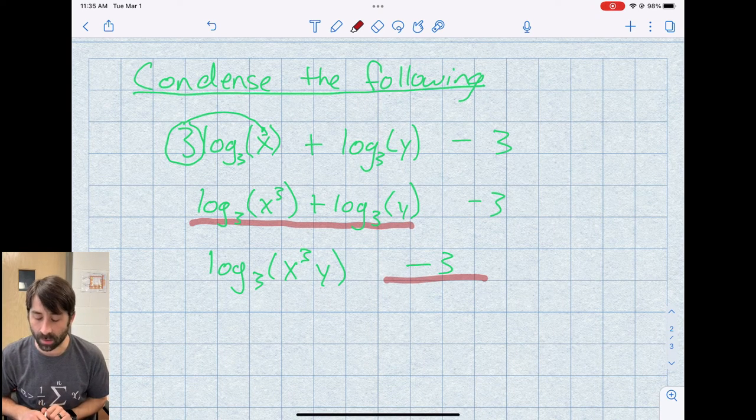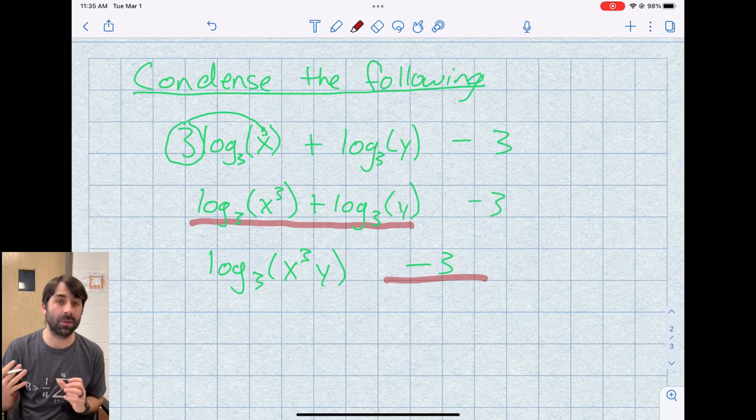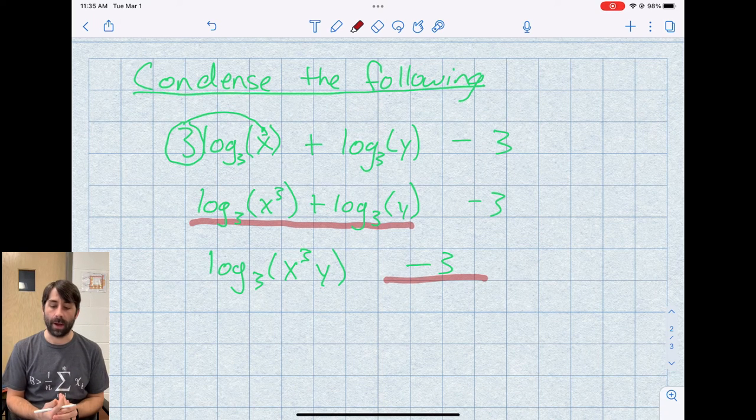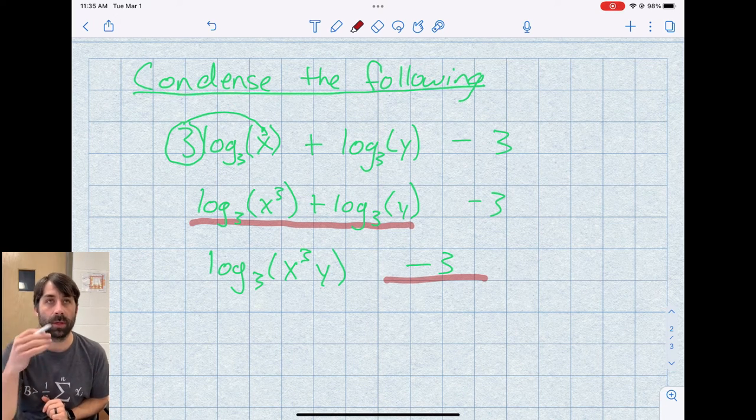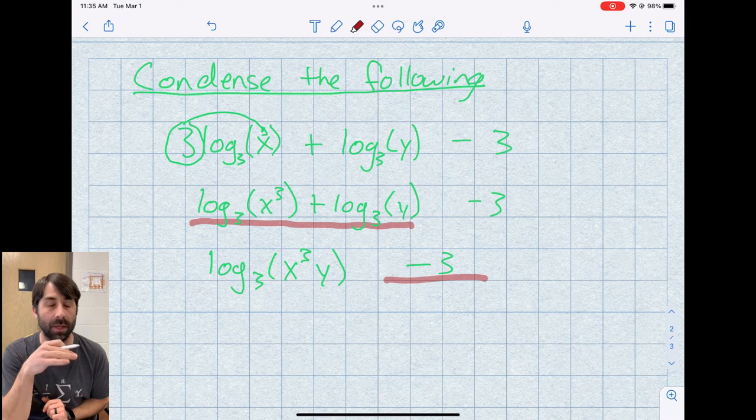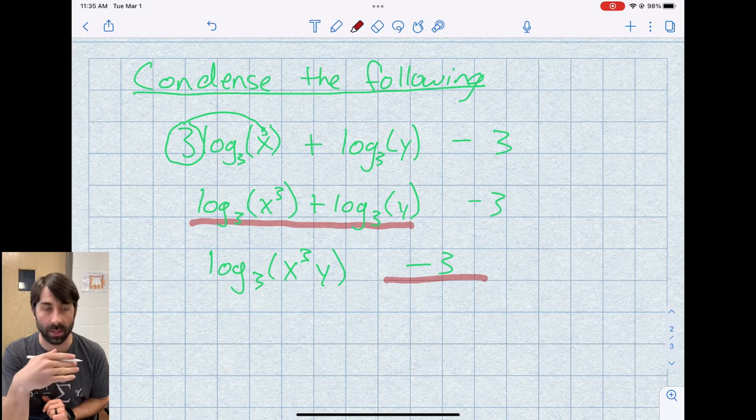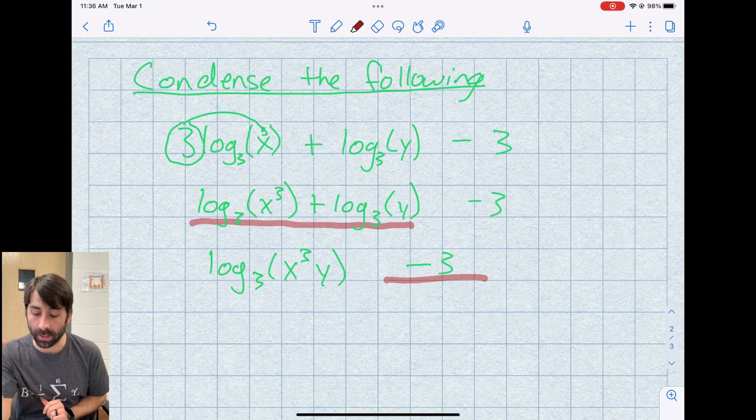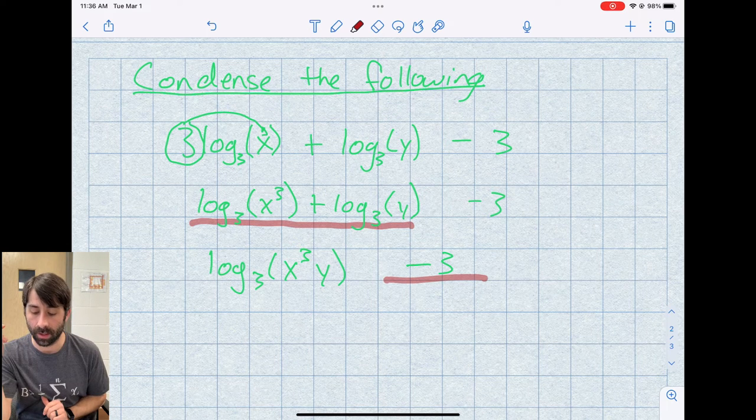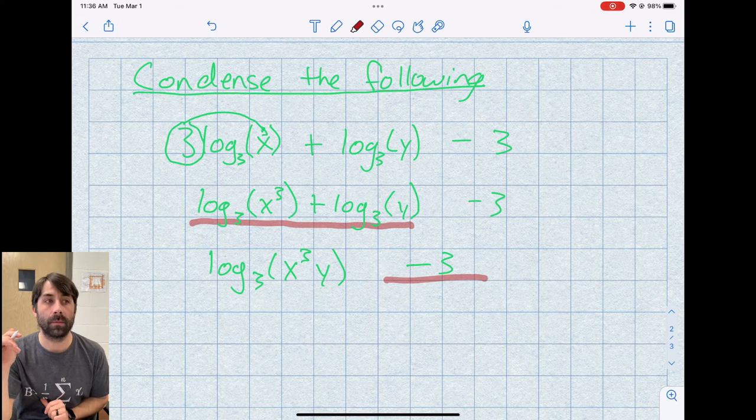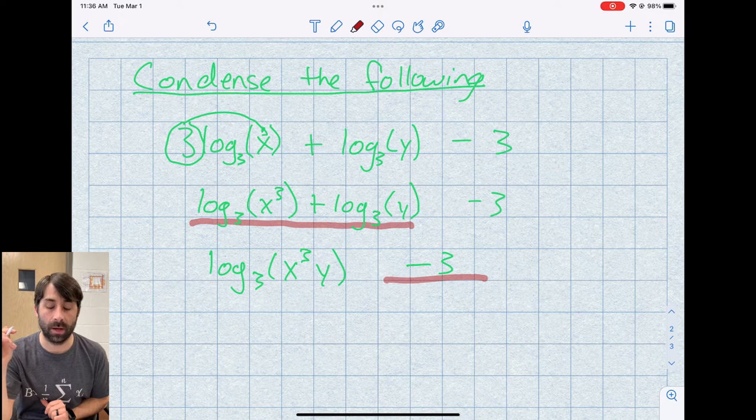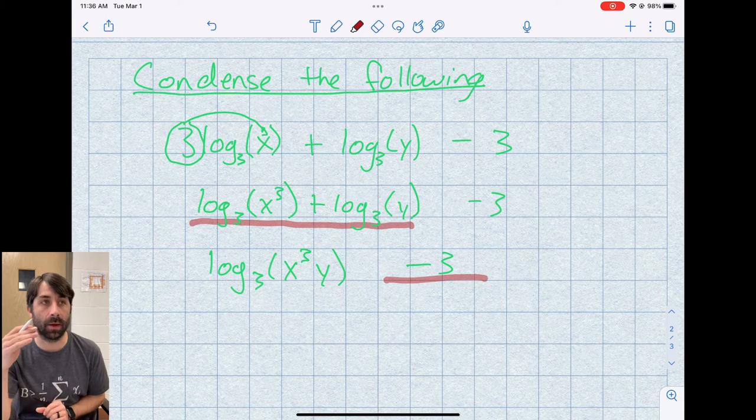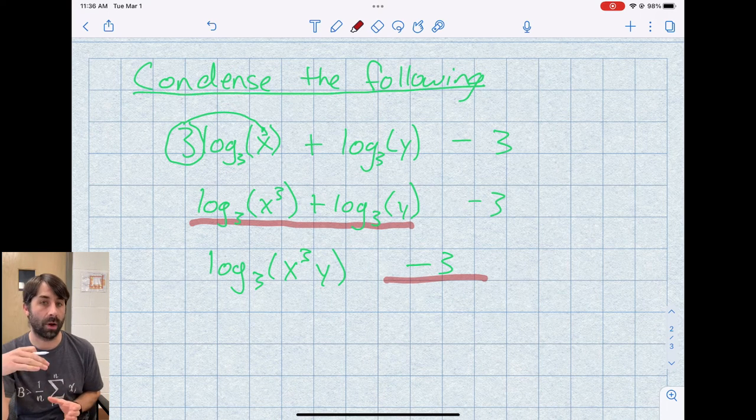And this requires a little bit of creativity. So we need to figure out how to write 3 as a base 3 log. Now how I like to approach these is I like to always think of the log is the exponent we raise the base to to get the argument. So the answer to a log is an exponent. So what I need is a log base 3 problem that I raise to an exponent. Or there's another way I can think about this.